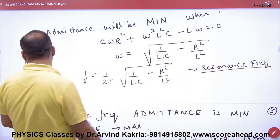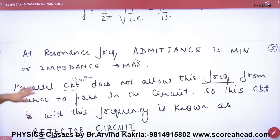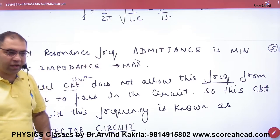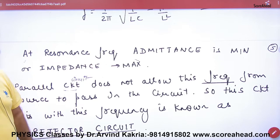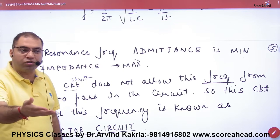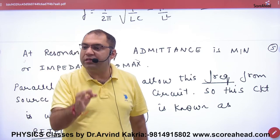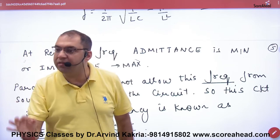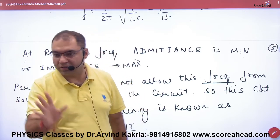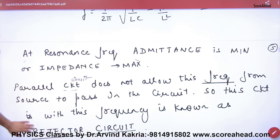Ki resonance frequency ke upar, joh impedance hai, voh maximum hogi. Kyunki admittance minimum kiya humne, aur impedance maximum hogi, to current kya ho jayega, zero. To current zero ka matlab ki is frequency pe current pass nahi hoga circuit me. Isko kya bolte hai, rejector circuit.